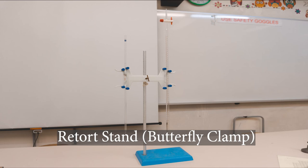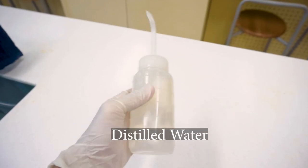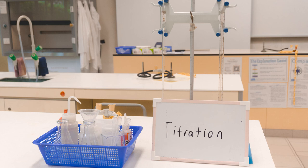A retort stand with a butterfly clamp, and finally a bottle of distilled water. Once you have all these items, you are ready to begin the process of titration.